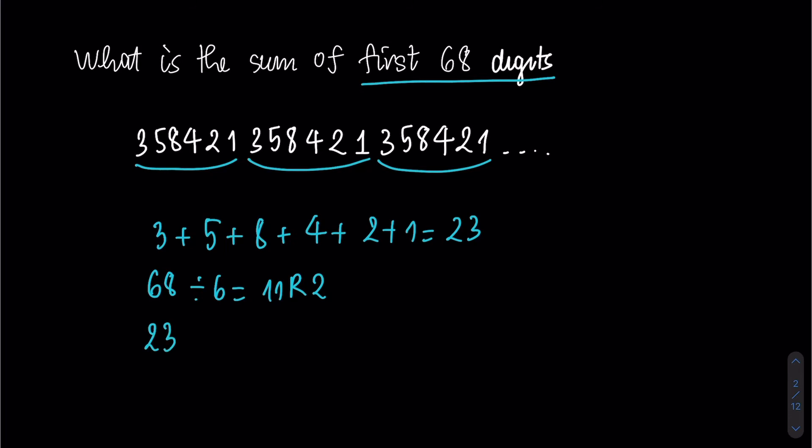So, the next two numbers should be 3 and 5. Therefore, the sum of 68 digits is 23 times 11 plus 3 plus 5, which equals 261. This is the answer to the question.